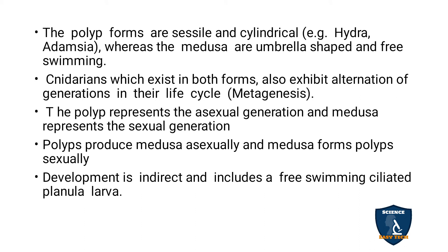Medusa are umbrella-shaped and free-swimming. Cnidarians have both forms in the same organism and show two different generations in the life cycle — that is called metagenesis. The polyp shows the asexual phase and medusa shows the sexual phase. The polyp produces medusa asexually and medusa forms polyps sexually. Development is indirect, and there is a free-swimming planula larva that moves with the help of cilia.